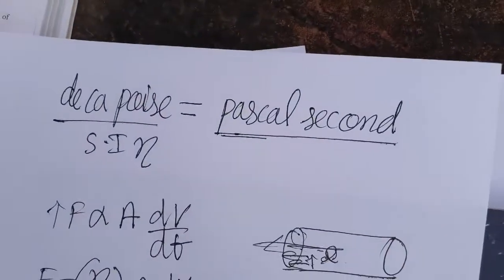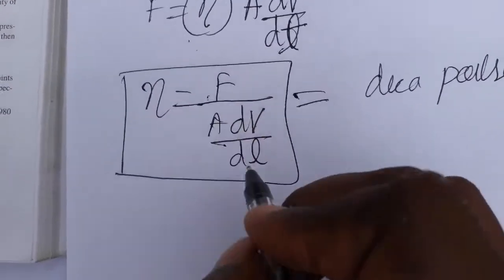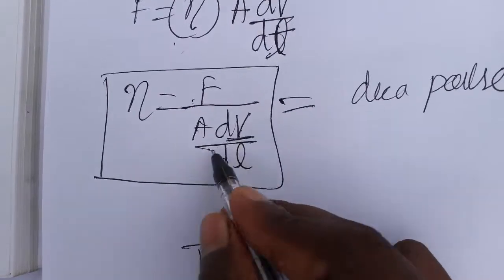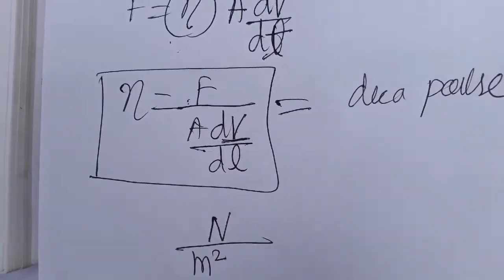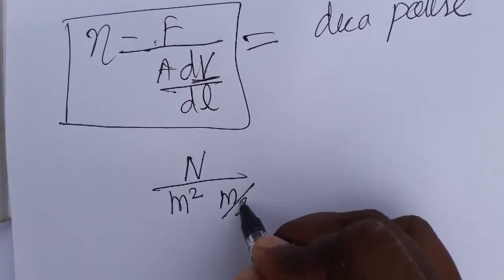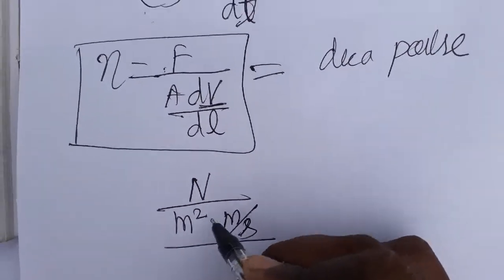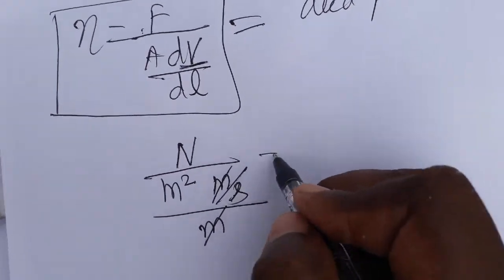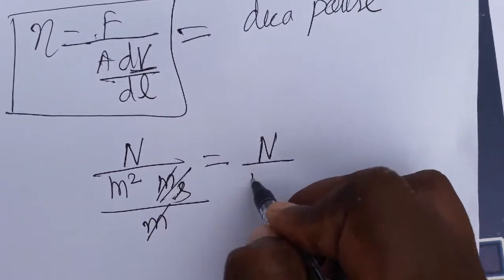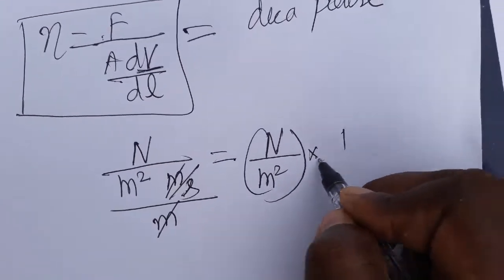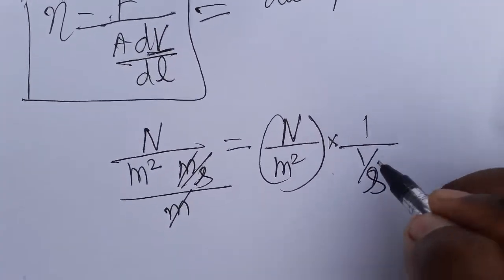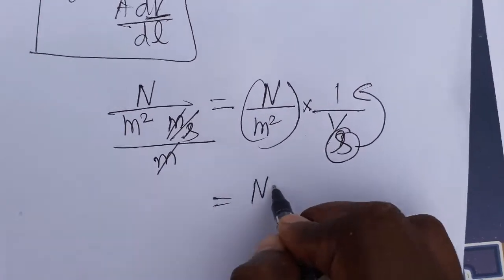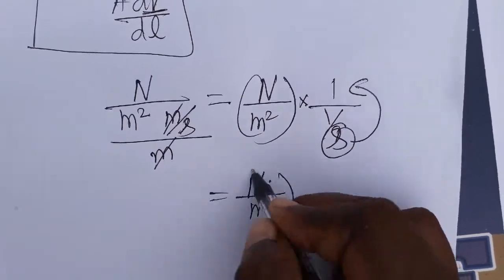Now let's see how this unit becomes Pascal second. The SI unit of force is Newton, and the SI unit of area is meter square. For the velocity gradient — that is changing velocity with respect to length — the SI unit is meter per second divided by meter. The meters cancel, giving us Newton per meter square, multiplied by one over one-per-second.